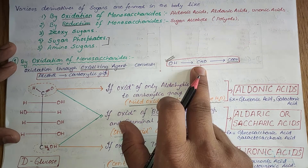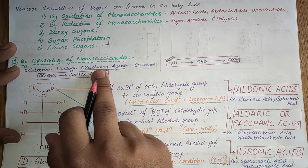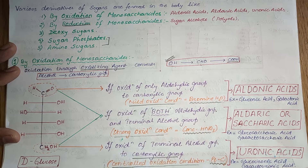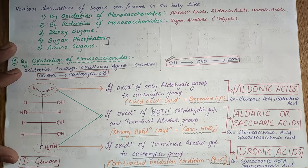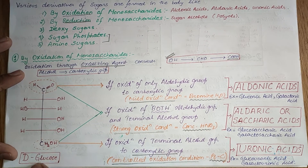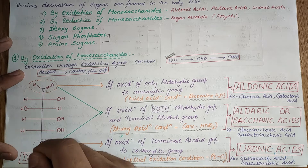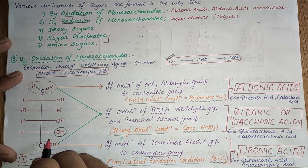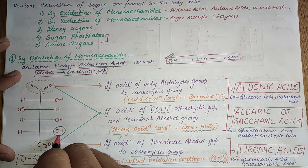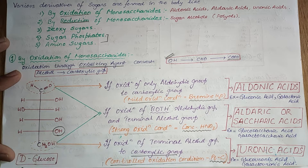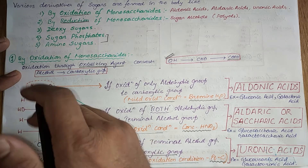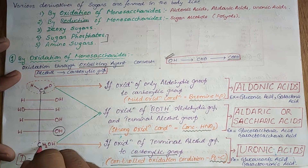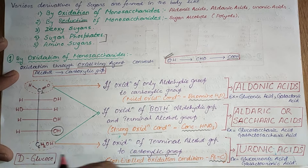This oxidation requires an oxidizing agent and can occur under mild oxidation, strong oxidation, or controlled oxidation conditions. Taking D-glucose as an example: D means the penultimate carbon atom of glucose has its hydroxyl group on the right side. D-glucose has an aldehydic group at C1 and an alcoholic group at C6.